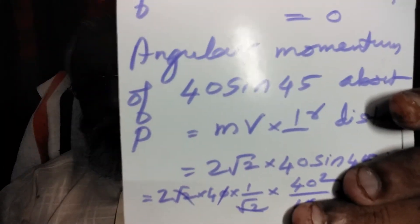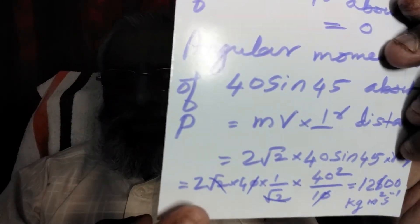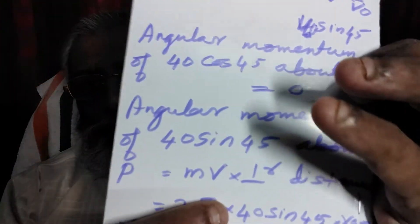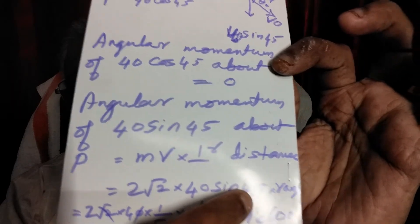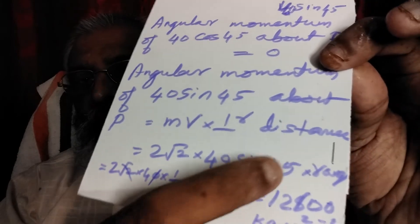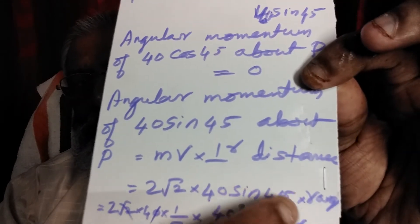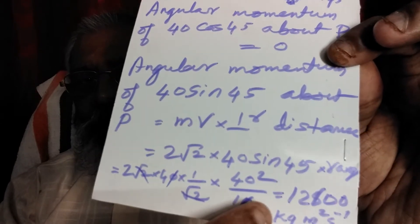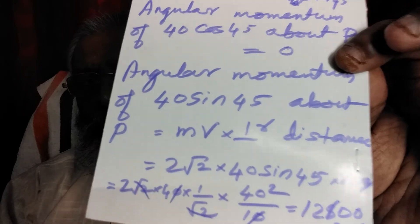The angular momentum equals 2√2 into 40 sin 45 into range. Range is v0 square by g. What is 40 square by g?